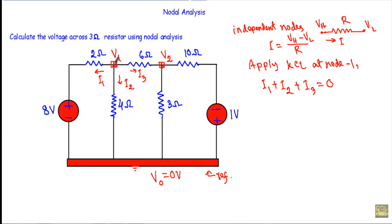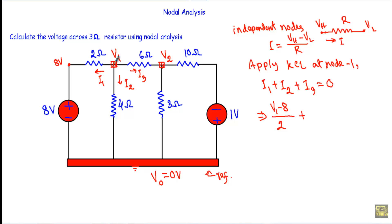I1 is flowing from this terminal towards this terminal. This terminal has a voltage of 8 volts. Therefore I1 will be equal to V1 minus V0 divided by 4. Since V0 equals 0, I will write V1 divided by 4.